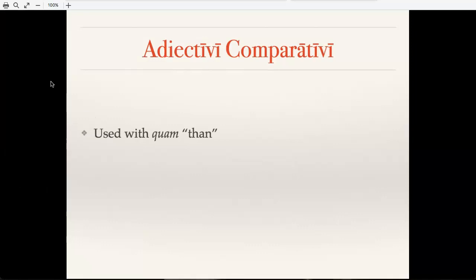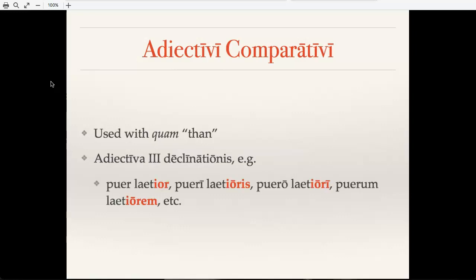Let's talk a little bit about how to use these. In English, we often say 'happier than somebody else,' in Latin we'll use 'quam' for that. Also these are third declension adjectives. So we'll say puer laetior, pueri laetioris of the happier boy, puero laetiori to or for the happier boy, puerum laetiorem, et cetera. So notice there that even though puer is a second declension noun, using those second declension masculine endings, laetior is going to use third declension endings.